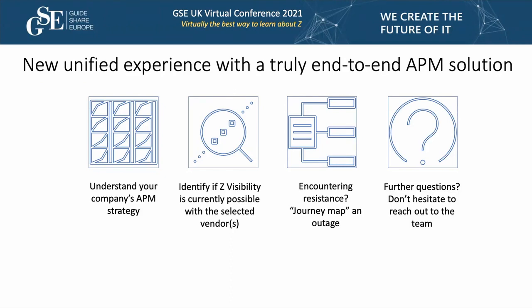If you get feedback from non-Z teams that say Z visibility isn't that important to them, I encourage you to go through the exercise of documenting what happens when an outage does occur. We call it journey mapping and user research — it's about what effects there are to a problem, what steps happen when a problem occurs, and how you were able to resolve it. That leads the way to identifying opportunities for expediting and improving the way problem remediation is currently done.